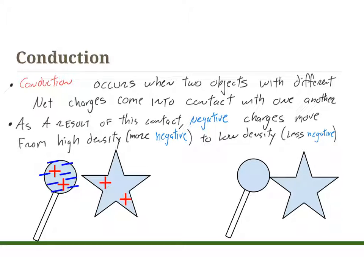The lollipop has eight negative charges, so the overall net charge of the lollipop-looking thing is a minus six charge. And the star shape, looking at it, only has positive charge. There's no negative charge as of yet, so it would have a plus two charge.